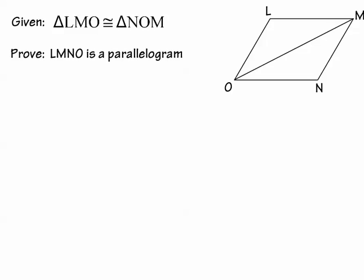In this case there are a couple of different ways to approach the problem. You could use corresponding parts — maybe sides, maybe angles, or a combination of the two. That's the route I'm going to take. I want to show you how that sixth method for proving that a quadrilateral is a parallelogram can be used, though there are other ways this proof could be done.